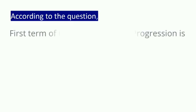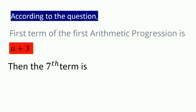According to the question, first term of the first arithmetic progression is A plus 3. Then seventh term is, instead of A, we have to put A plus 3 plus 6D, that is equal to 28.